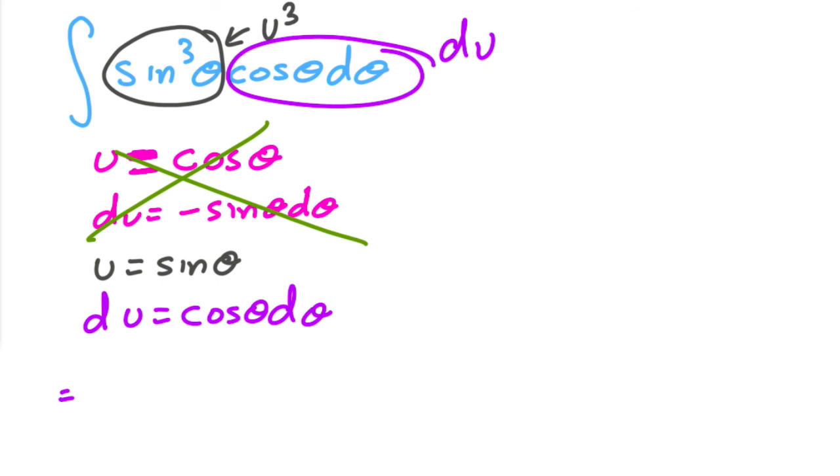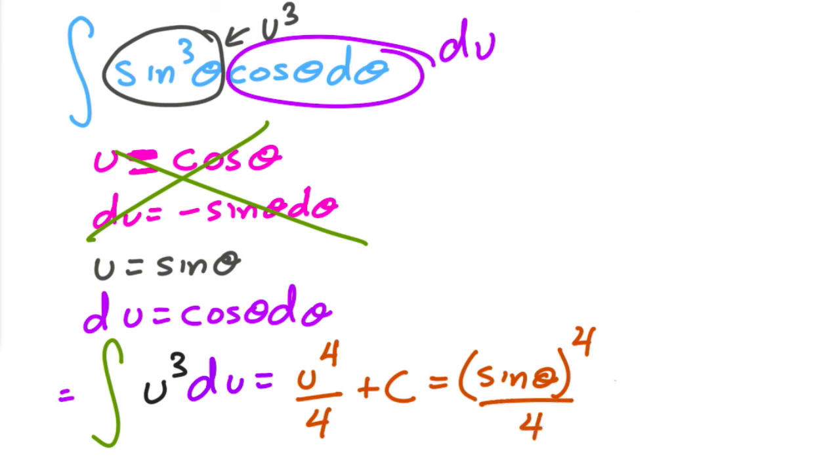So it looked crazy difficult, but in reality, it wasn't because now all I have is the integral of u to the third du. And to find the anti-derivative of this, this one's easy. I just use the power rule now, u to the fourth over four plus c, which is then equal to u is equal to sine to the fourth over four plus c. And that's it.